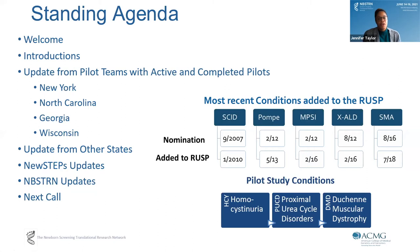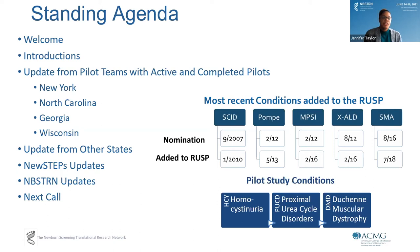If you're interested in giving a monthly update from your state, please contact me and I can add you to the agenda. We also get updates from our partners such as NewSTEPs and APHL. These calls started historically by providing information when SCID was added to the RUSP, but have now transitioned to other conditions such as Pompe disease, MPS1, XALD, and SMA. We also get updates about conditions being piloted such as homocystinuria, urea cycle disorders, and Duchenne muscular dystrophy.